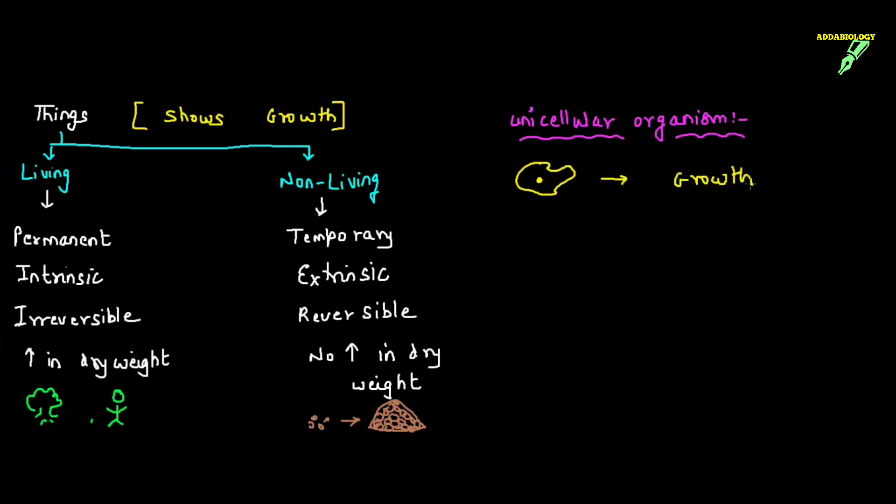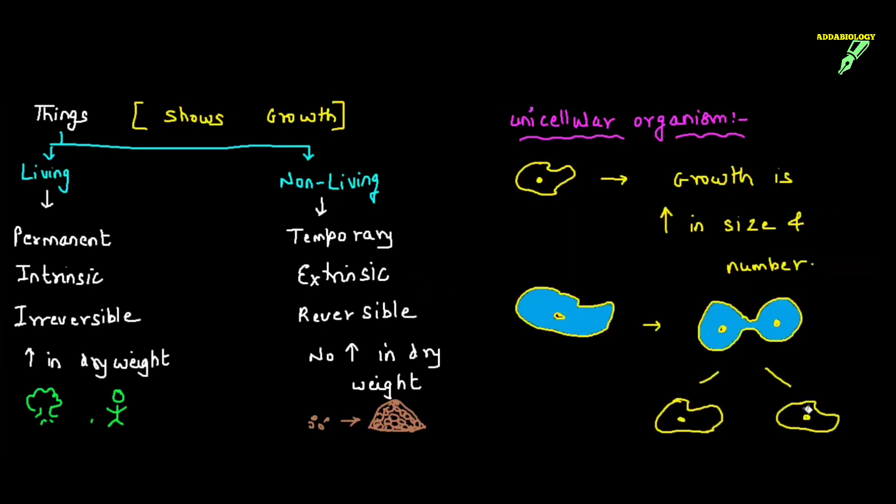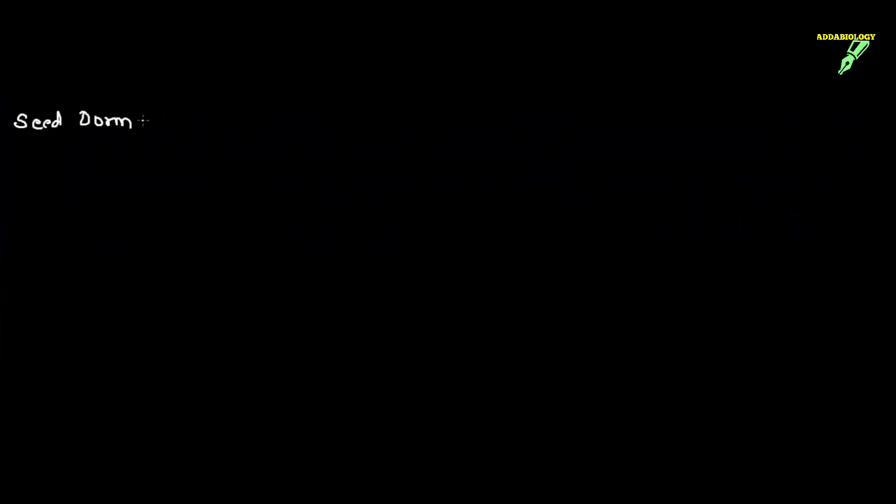Whenever we talk about unicellular organisms, you need to understand that they will always grow in size and number. But the moment they grow in size, they always divide by binary fission to increase in number. Multicellular organisms will not show such type of growth.